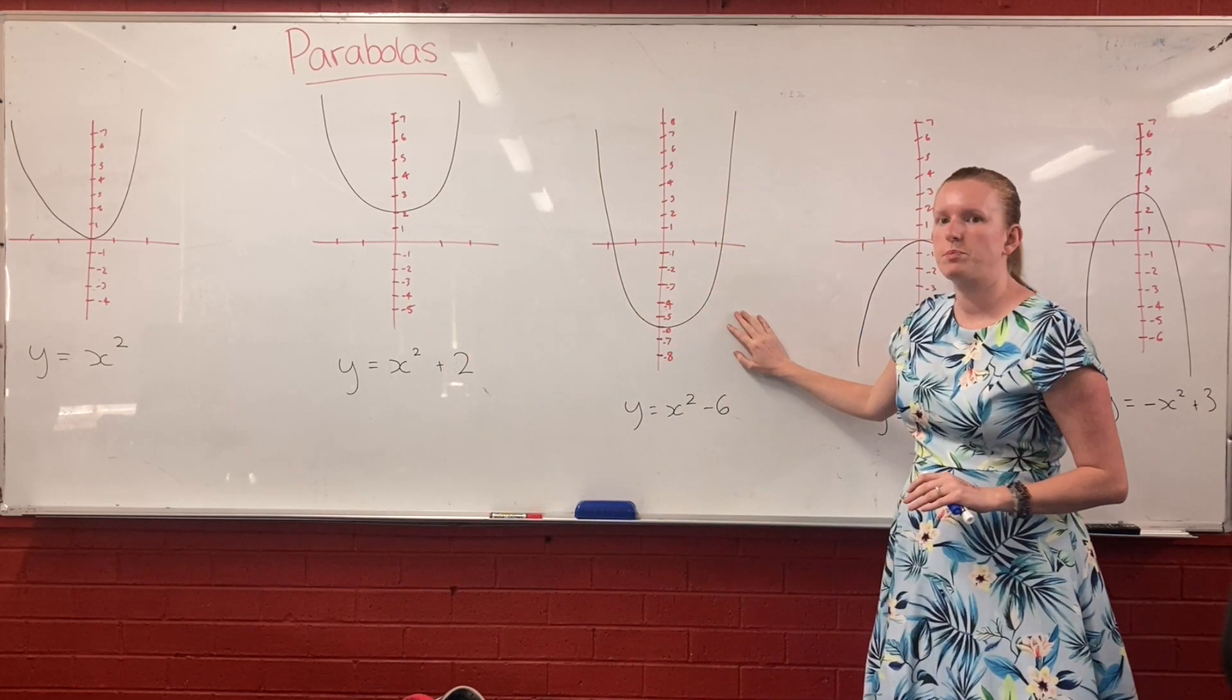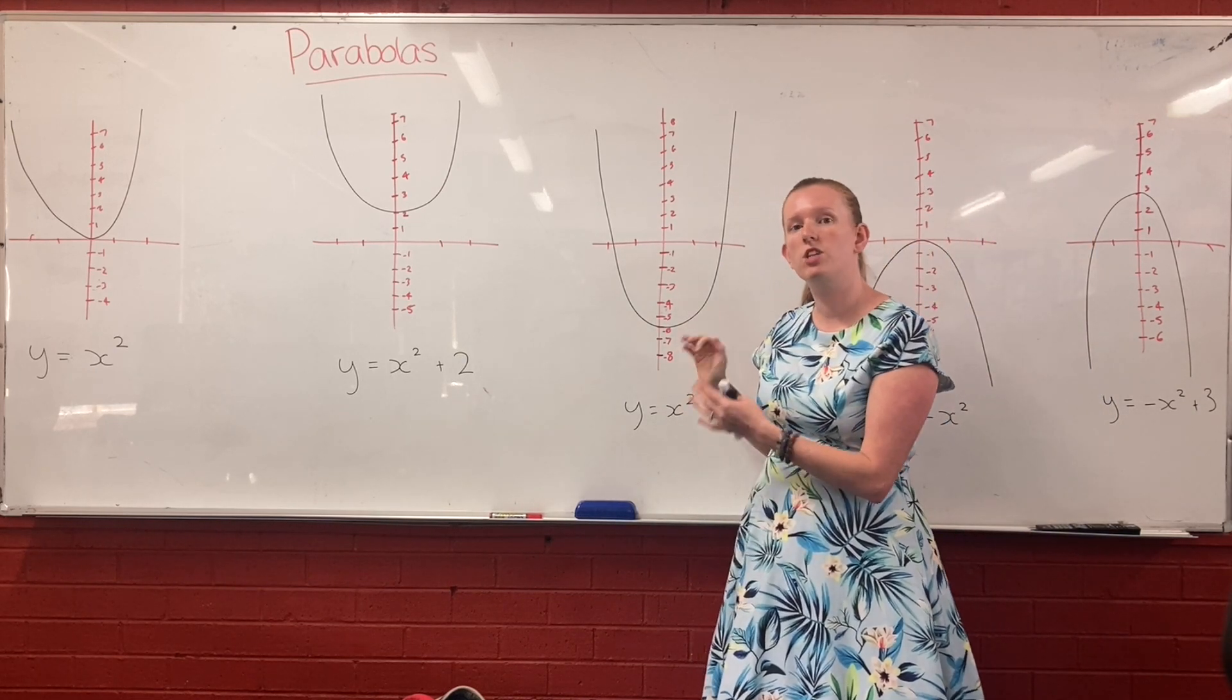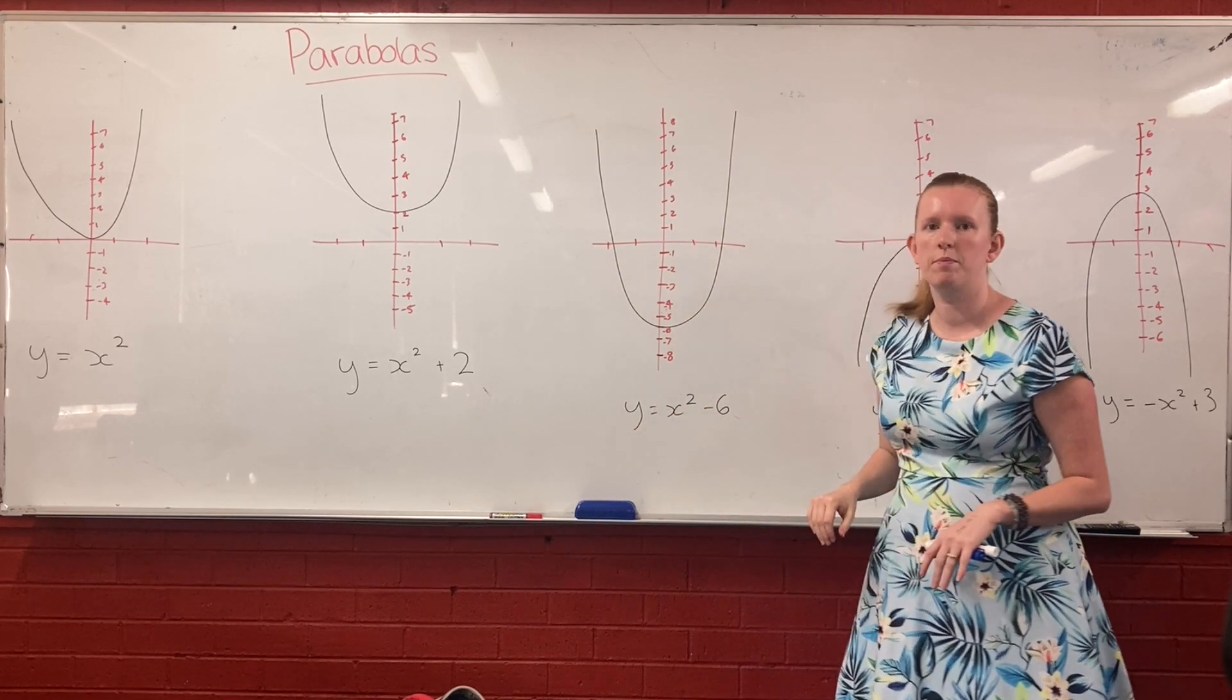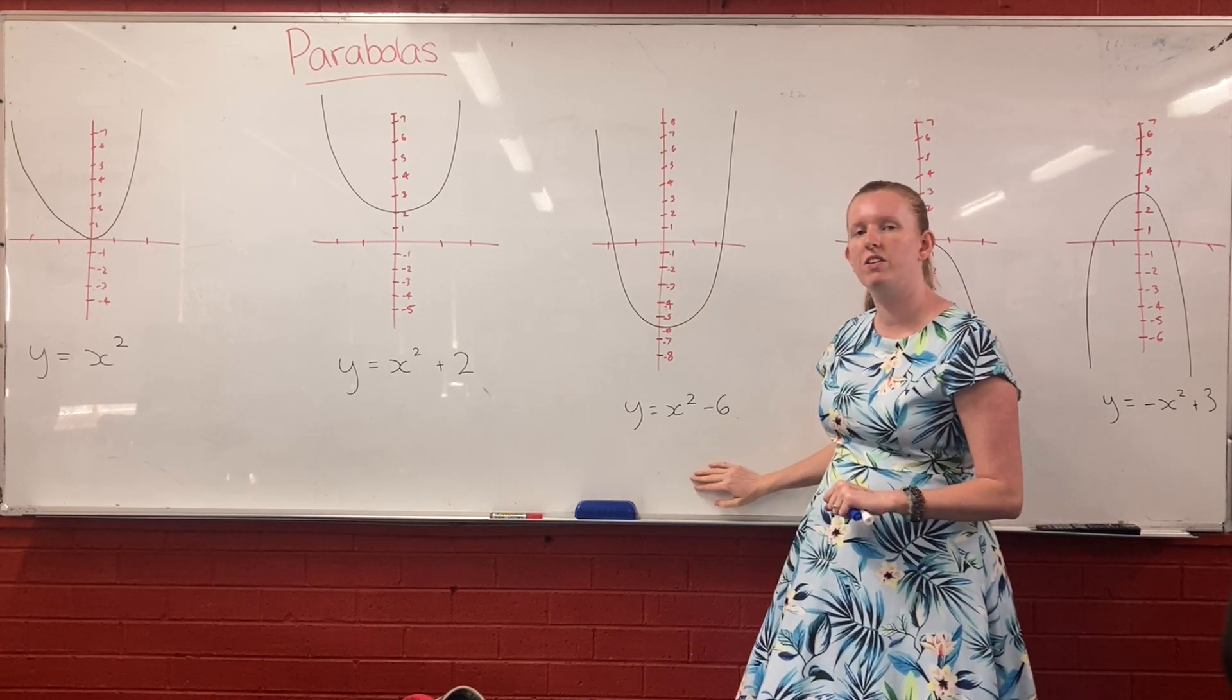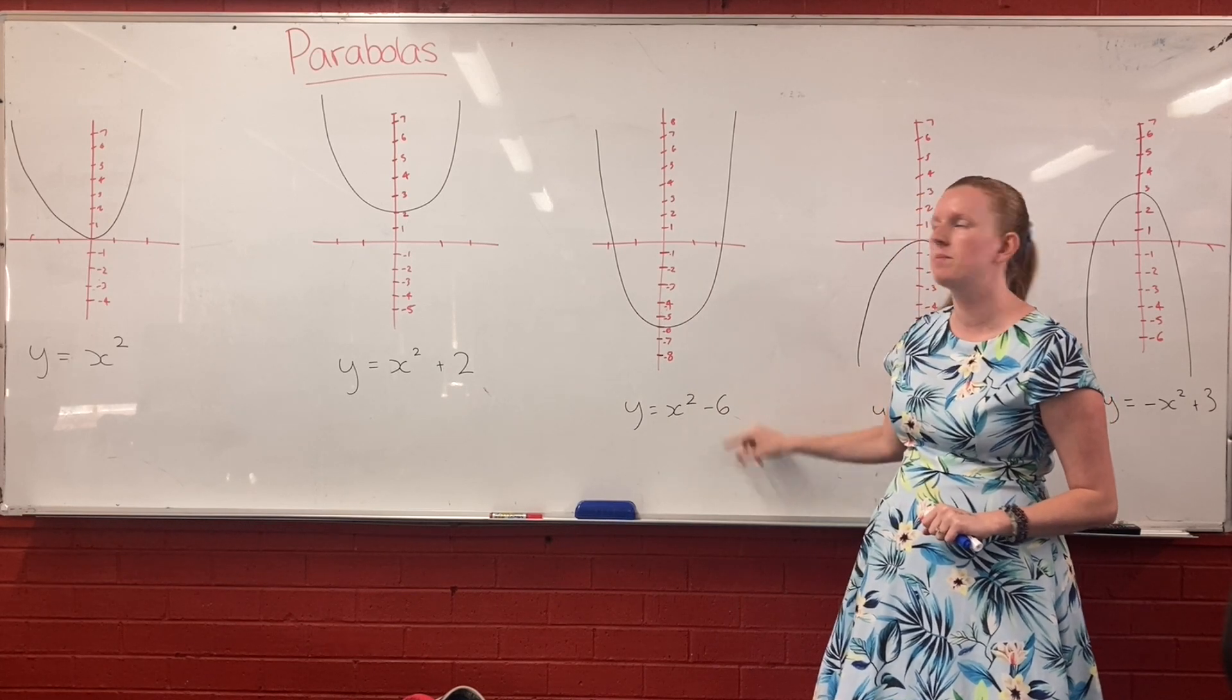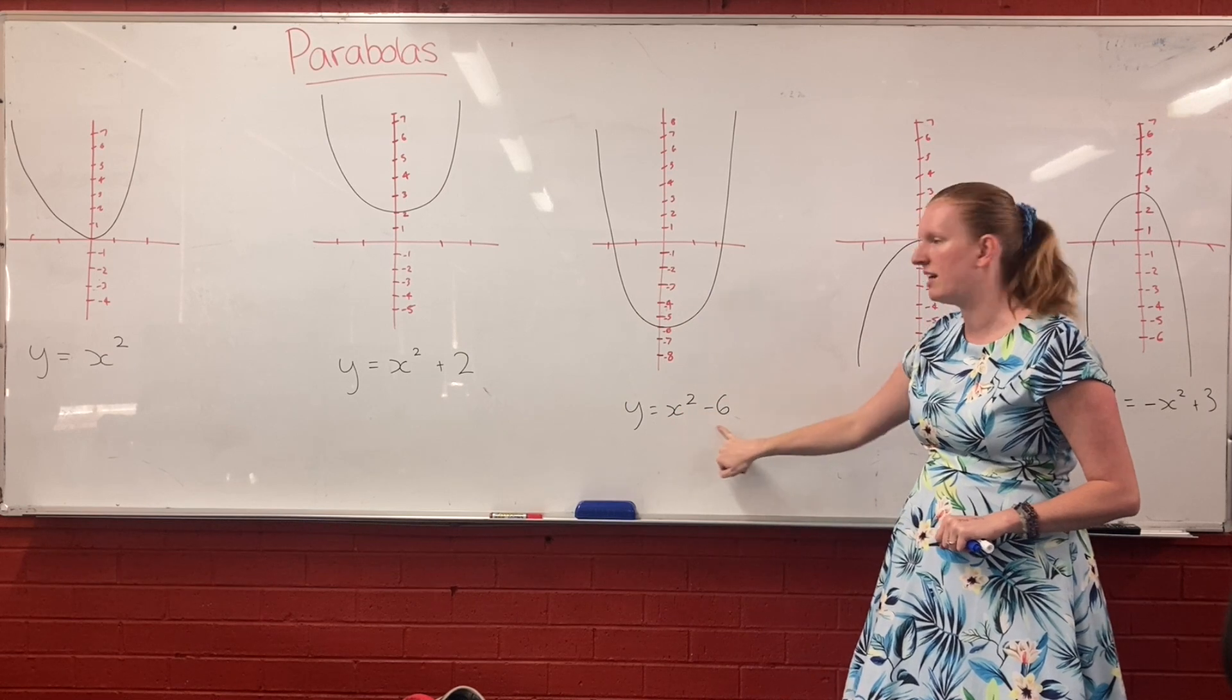So let's move over to this one. This one, same shape parabola, nothing else has changed about it except that it's been moved down a couple of spots. So it has been moved down and it's touching our y-axis at negative 6, which means that our equation for this parabola is y equals x squared minus 6.